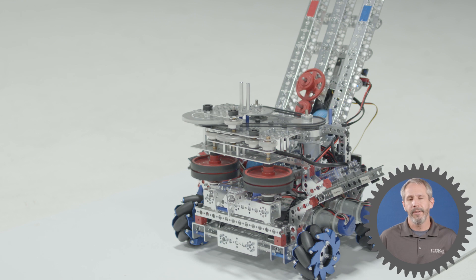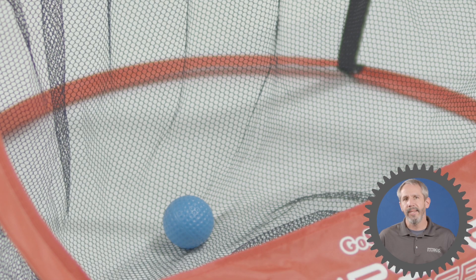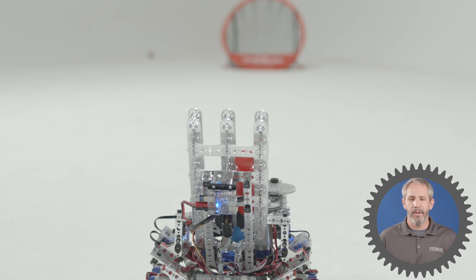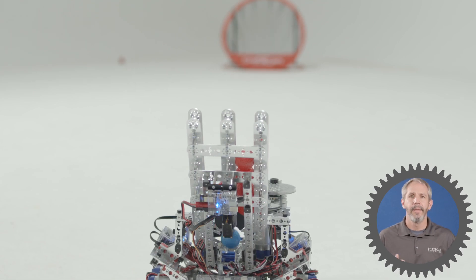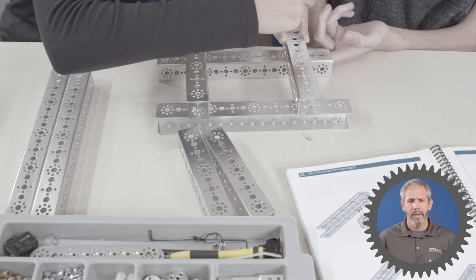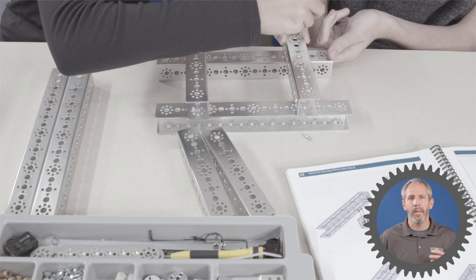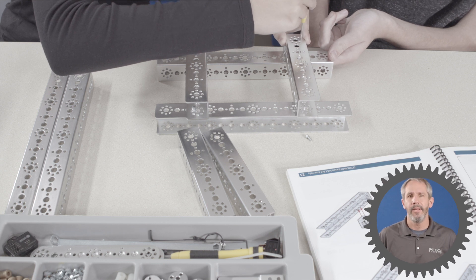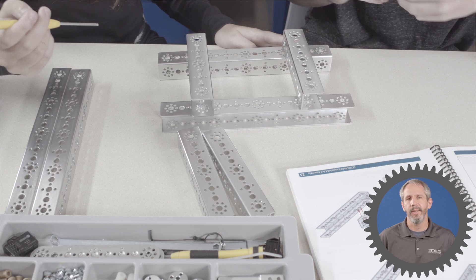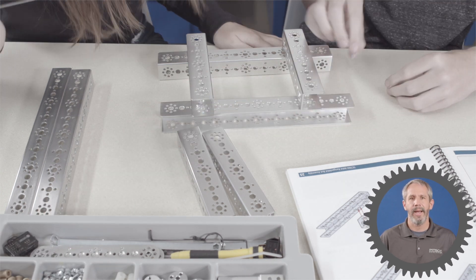Other considerations include the size, shape, or weight of the object that you're shooting. Also the distance or height that you have to shoot the object. Of course how the element is going to be loaded into the robot is an important consideration, and then the parts and pieces or the resources that you have to build your shooting mechanism out of.